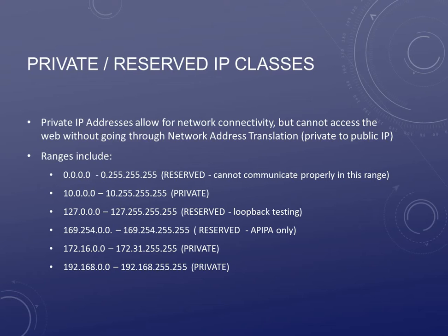There is a private range. The first private range is the 10 range — 10.0.0.0 to 10.255.255.255. That is a private range that companies can use in their internal network. They can set up a DHCP server to send out these addresses to machines that need IPs, and they don't have to worry about purchasing any. But they have to run network address translation to turn these private addresses into a public address so those machines can get to the internet. There is also a reserved block in the 127 range that's strictly used for loopback testing — no machine should hold a 127 address.